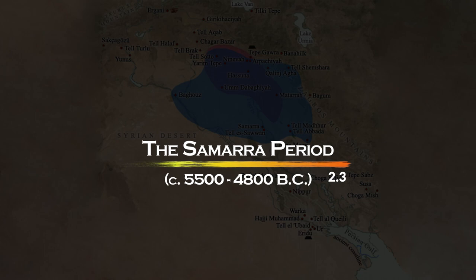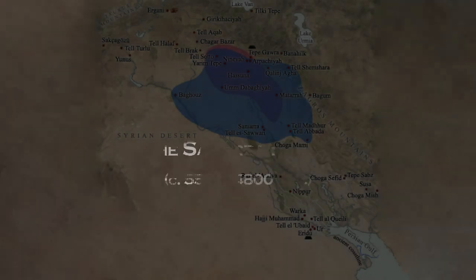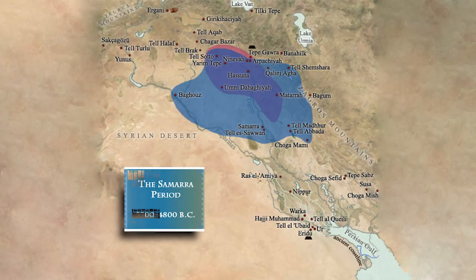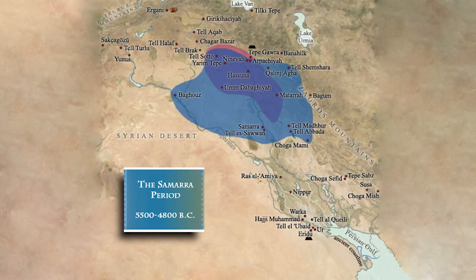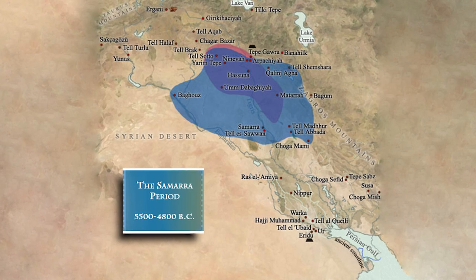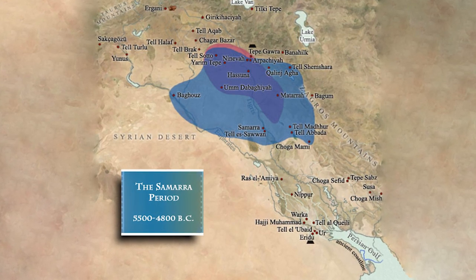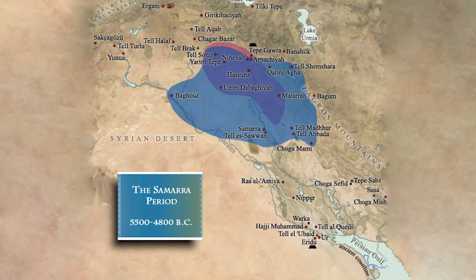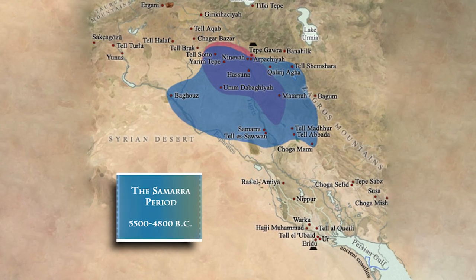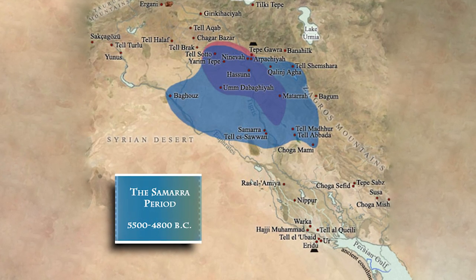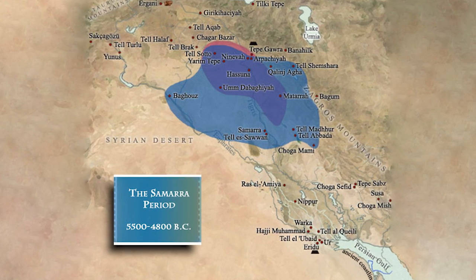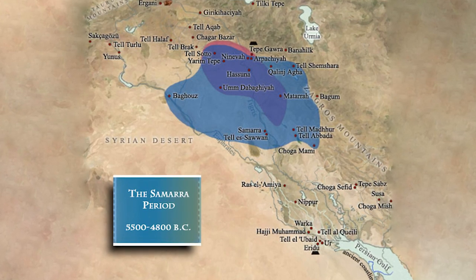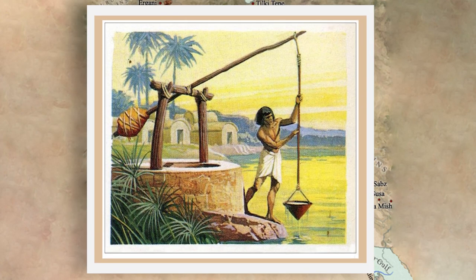The Samara culture emerged as the second early Neolithic culture, contributing to the development of civilization in Mesopotamia from 5,500 to 4,800 BC. While existing concurrently with the Hasuna culture, the Samara culture was situated further south in the Mid-Tigris region, although there was significant overlap in the central Mesopotamian heartland. Unlike the Hasuna settlements, many Samara communities were located beyond the limits of the rain-fed zone. It was in these areas that simple irrigation techniques, crucial for successful agriculture, were first devised.